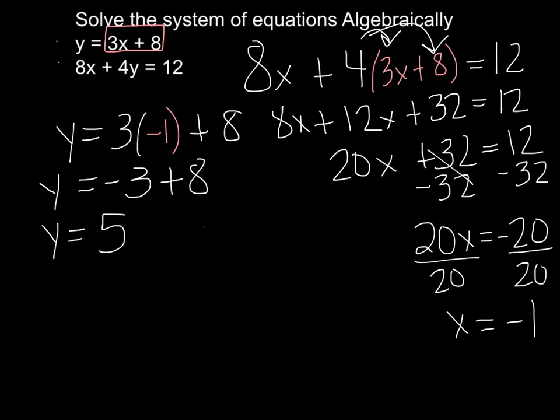So the ordered pair at which they meet, x is negative 1. Y is 5.